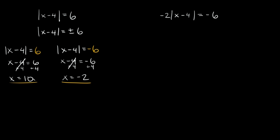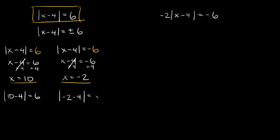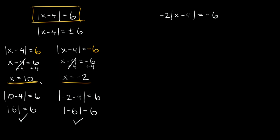If you want to check your answer, just plug these two numbers back into the original equation. Plugging in 10: the absolute value of 10 minus 4 equals the absolute value of 6, which equals 6 — true statement. Plugging in negative 2: the absolute value of negative 2 minus 4 equals the absolute value of negative 6, which equals 6 — also a true statement. So both answers, 10 and negative 2, are correct.